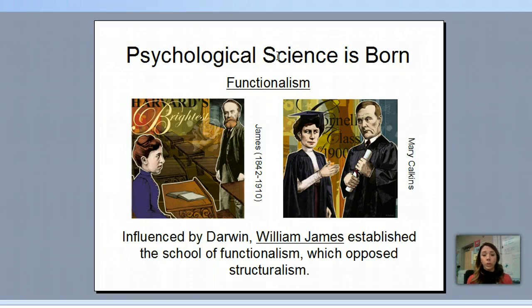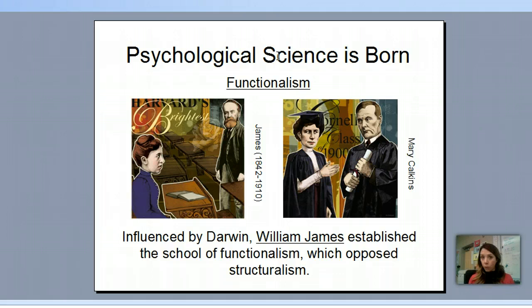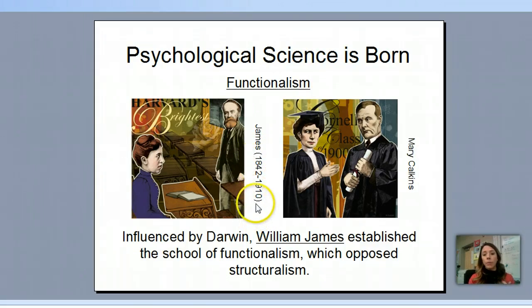William James was heavily influenced by Darwin. Darwin's natural selection stated that traits beneficial for the animal or human will be passed on, and traits that are not beneficial will die off. James looked at psychology the same way: behaviors that allow us to survive and reproduce will go on, and the ones bad for reproduction or functioning in society will die off. This is very different from structuralism — James focused on functionalism and how people function within the environment.